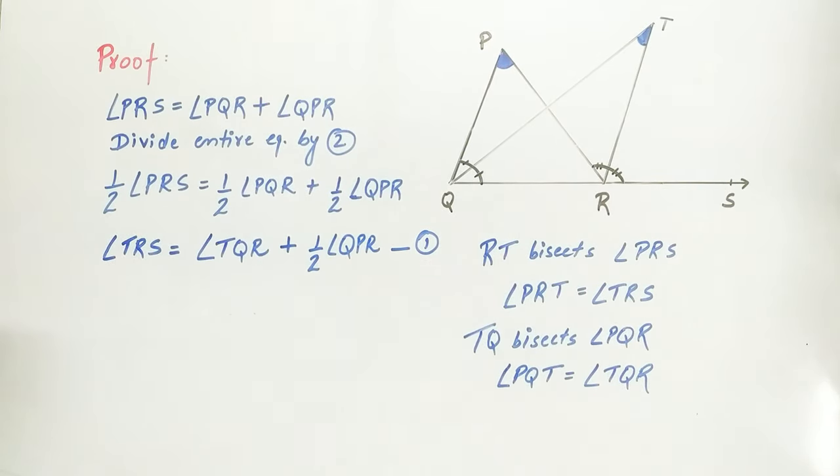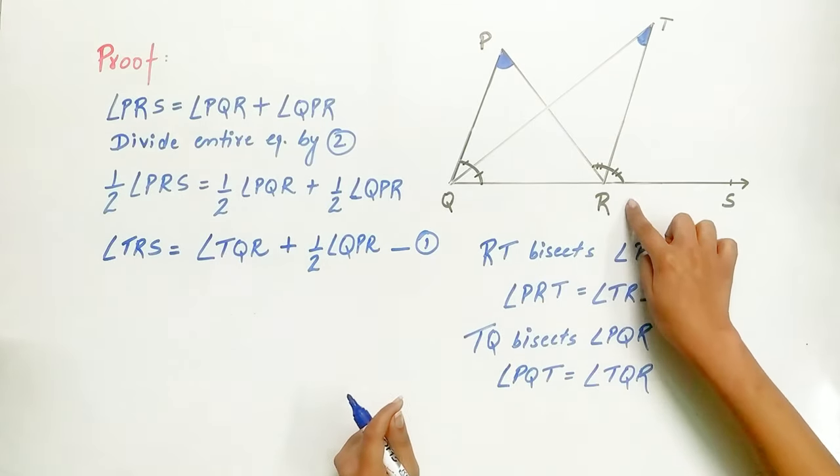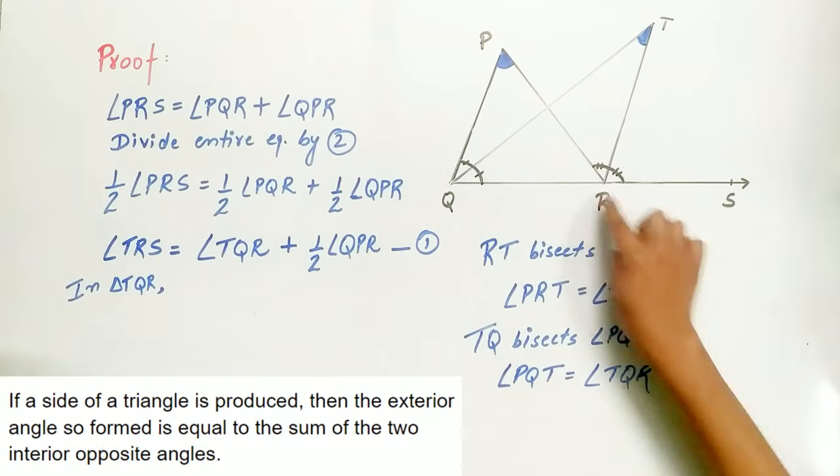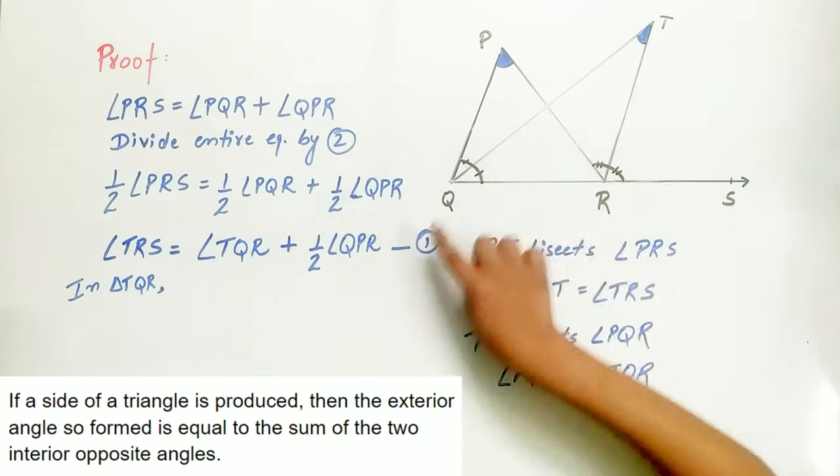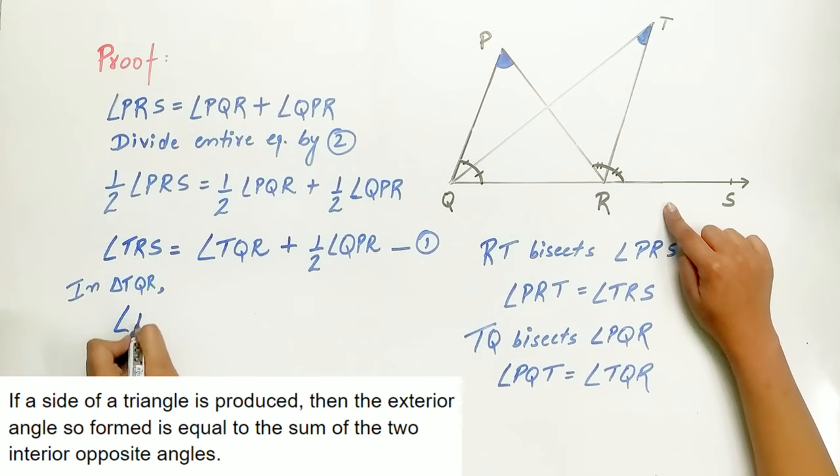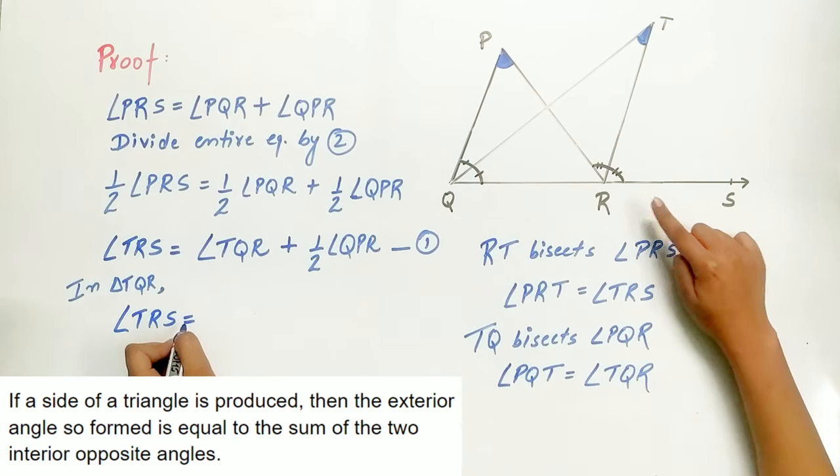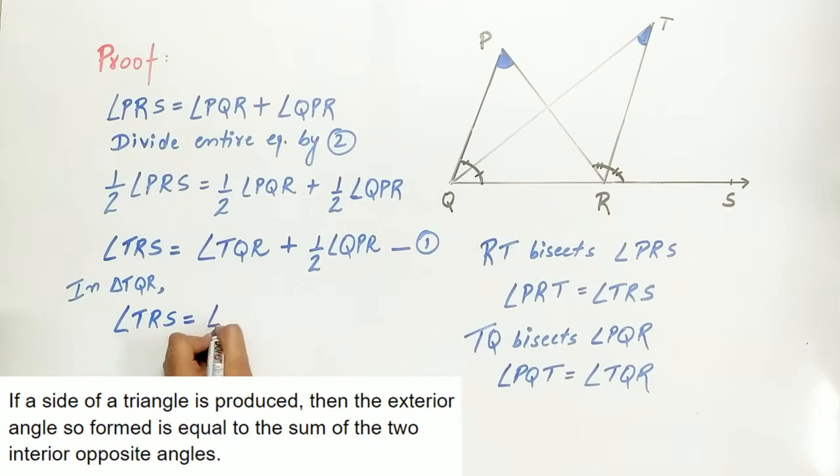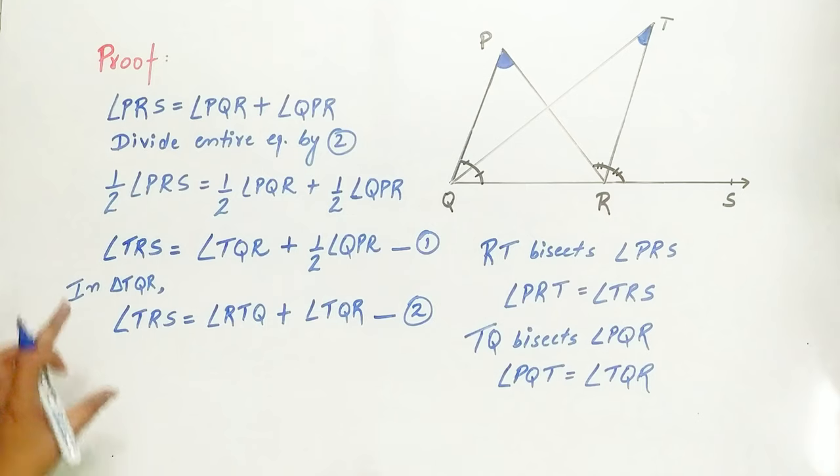Now, let's move to another triangle TQR. TRS is an exterior angle of triangle TQR. Hence, angle TRS equals angle RTQ plus angle TQR. And mark it as equation 2.